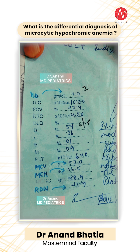If a patient has anemia, the next thought process is: which type? Can you see the MCV and MCH? The normal MCV is 82 femtoliters, but here it is 57. The normal MCH is 30 ± 3 picograms, but here it is 16.5. So this patient has microcytic hypochromic anemia.